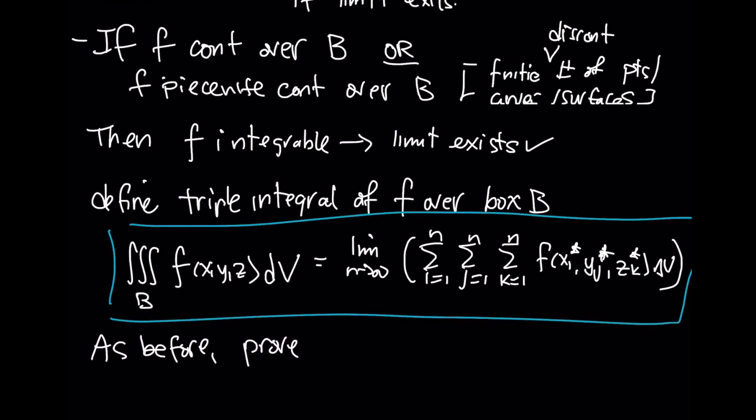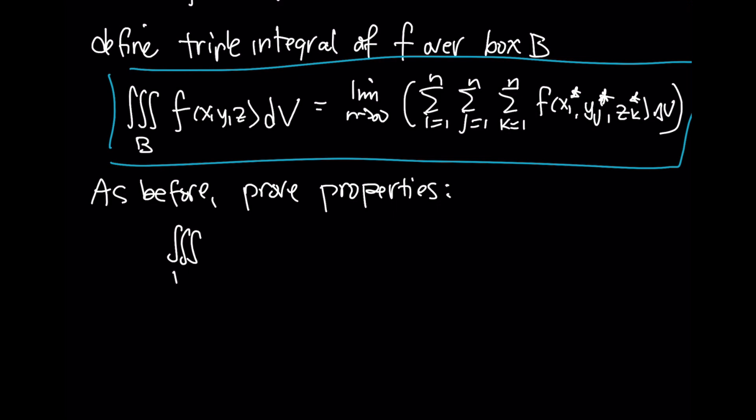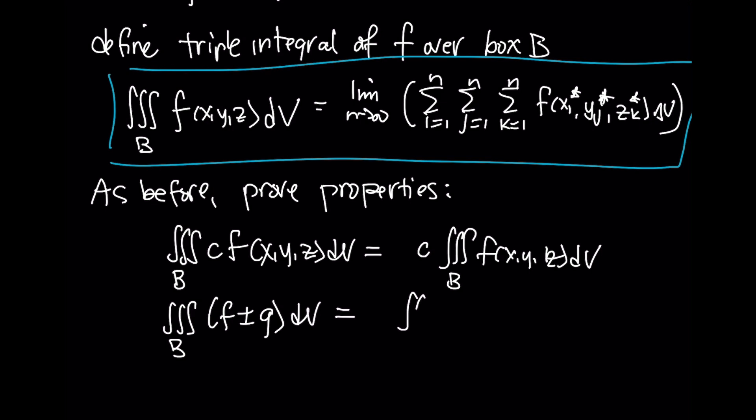As before, you can prove the following properties. We'll have our usual linearity properties. So if we have a triple integral of a constant times a function over some rectangular box region, we can simply take out that constant. The integration of a sum or difference of two functions, it will end up being the sum or difference of the triple integrals.